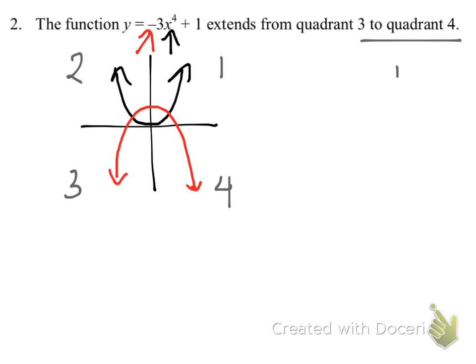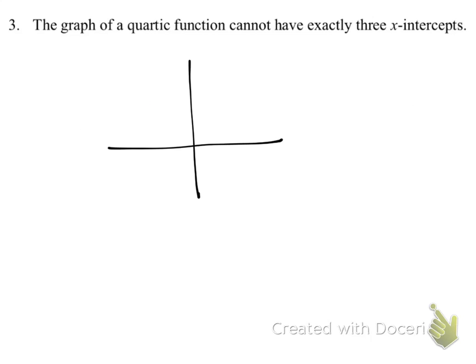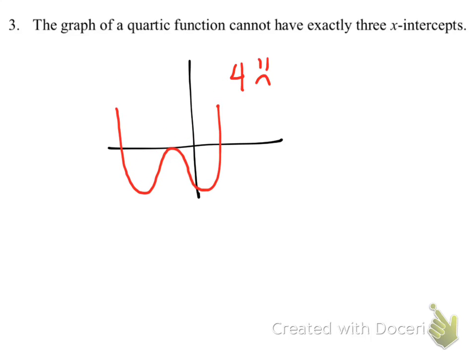Next question: the graph of a quartic function can't have exactly three x-intercepts. Here's a quartic function with four x-intercepts, but if I move it down just a little bit, now it's got one, two, three x-intercepts. That means this is false — it can have exactly three x-intercepts.